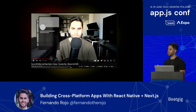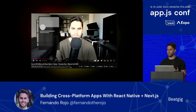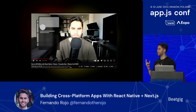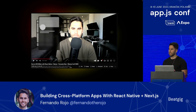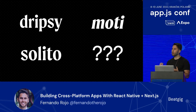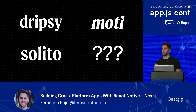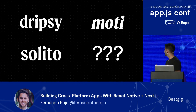I first spoke about React Native with Next.js at Next.conf in 2021. In that talk, I discussed the many challenges I faced, including navigation, animations, responsive design systems, platform-specific features, and monorepos. And I walked through how I built a few libraries to solve those problems, such as Dripsy, Moti, and Solito. Looks like one of them might be missing — maybe you'll find out at the end of the talk.